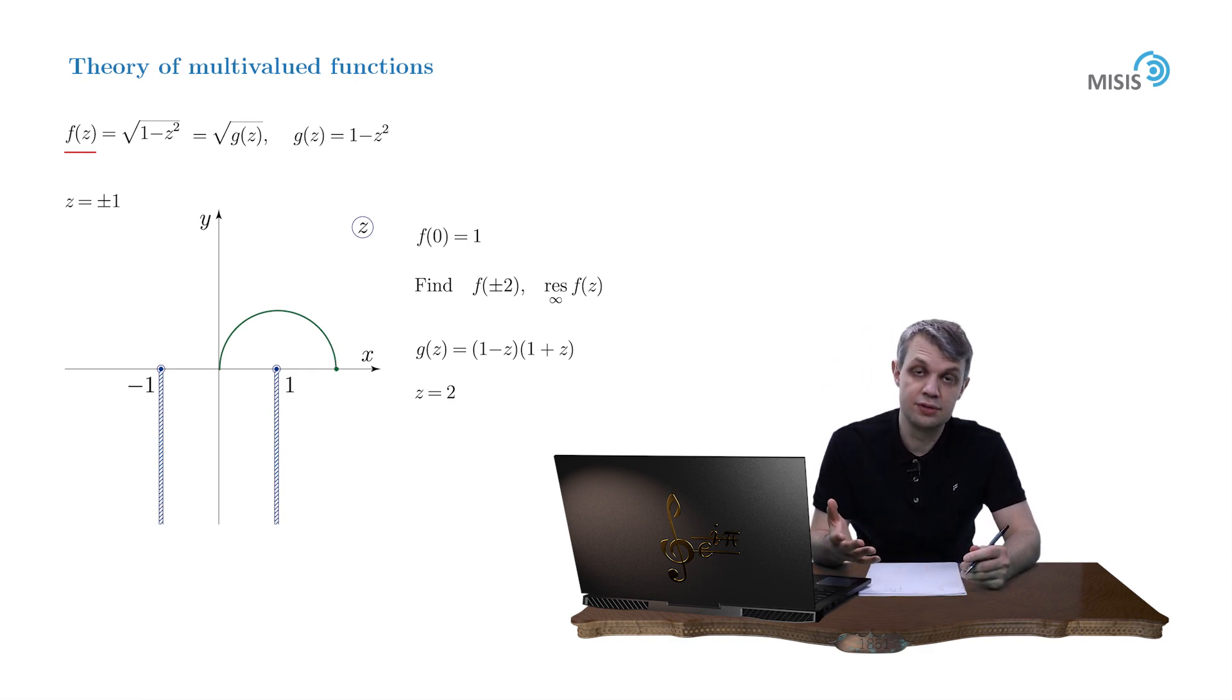The next step is to trace back the change of the arguments of the constituents of our function under the root. We see that the arrow representing number 1 minus z rotates in the clockwise direction by angle pi. Don't get confused by the fact that this arrow rotates around its head rather than its origin. If you put yourself into the system of reference connected to its origin, you will immediately convince yourself that the arrow undergoes the same pi rotation in the same clockwise direction.